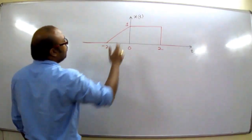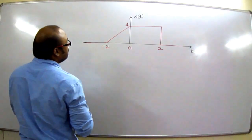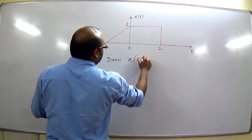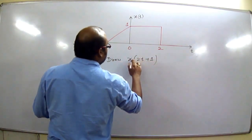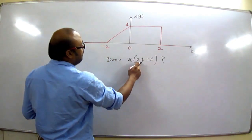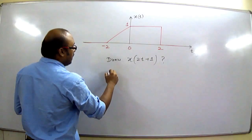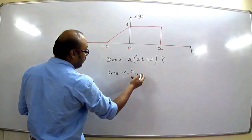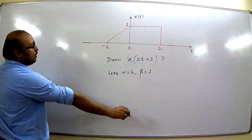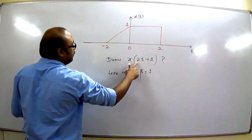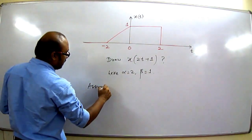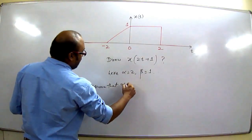Here we have to modify X(T) — let us draw X(2T + 1). X(T) is given and we have to draw X(2T + 1). Here α is 2, the original value of α is 2, and β is 1. To draw X(2T + 1) from X(T), first of all we assume that α is 1.